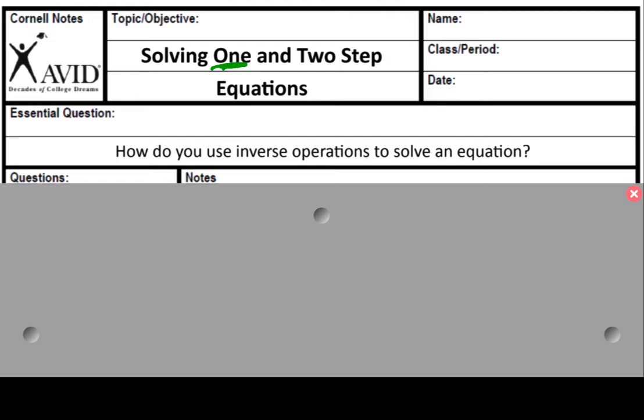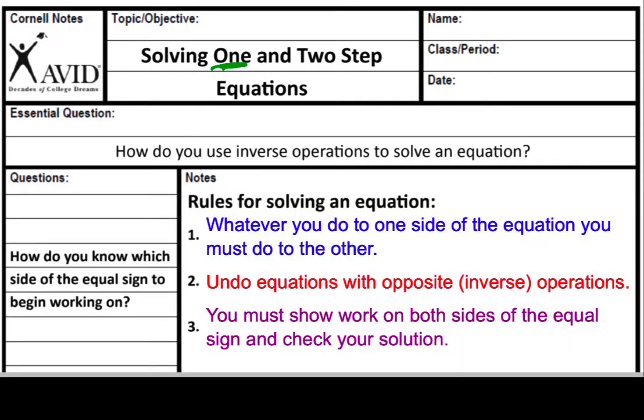You should have your notes page ready to go in your notes packet. We're on the page that says solving one and two-step equations, and we're going to start by filling in our three steps. Here are our rules or our steps for solving an equation. Number one, whatever you do to one side of the equation, you must do to the other. So we've got to keep it balanced. You've got to treat both sides the same.